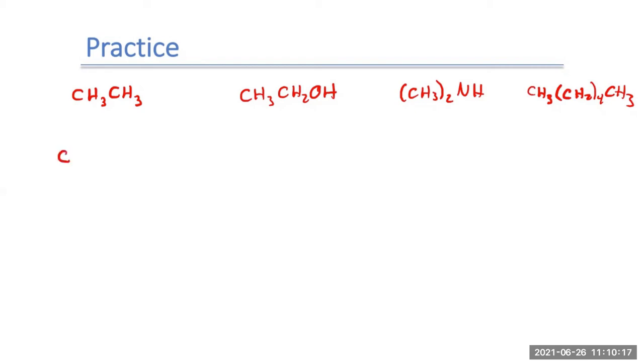CH3CH3. Pretty straightforward. If we wanted to draw a Lewis structure, I'd have my carbon with those three hydrogens attached to it for each of those. Not too bad. Or it could be a line. Hey, look how quick and easy that one is.